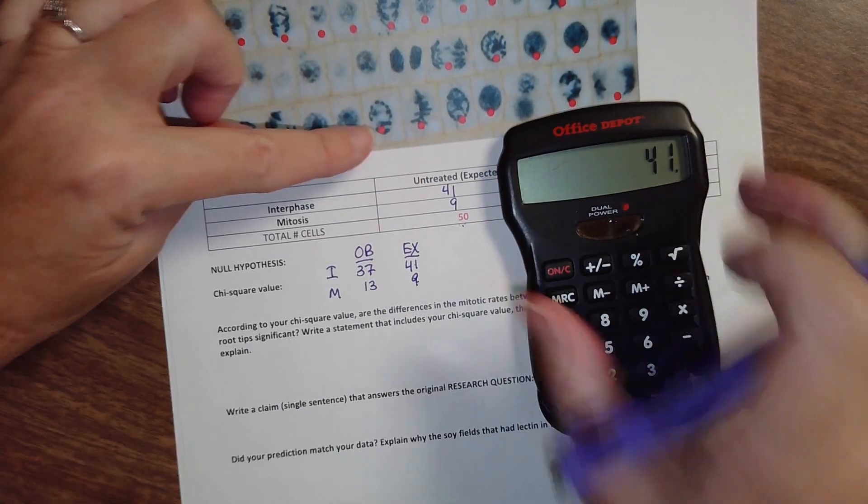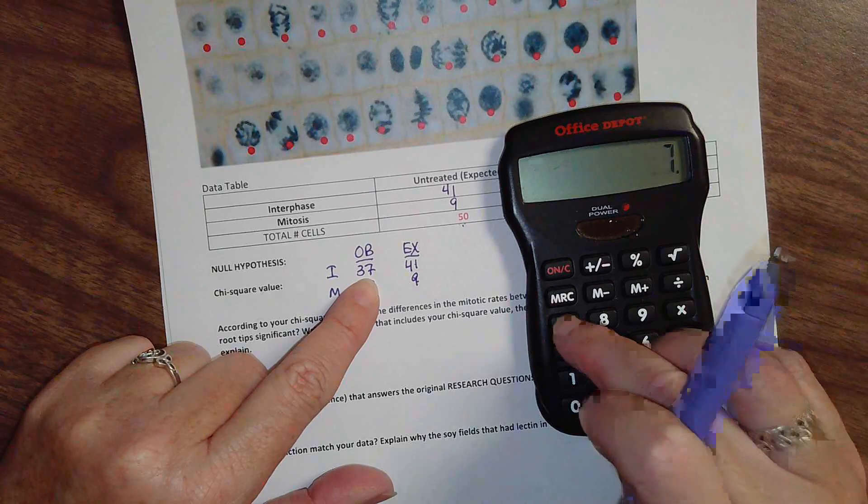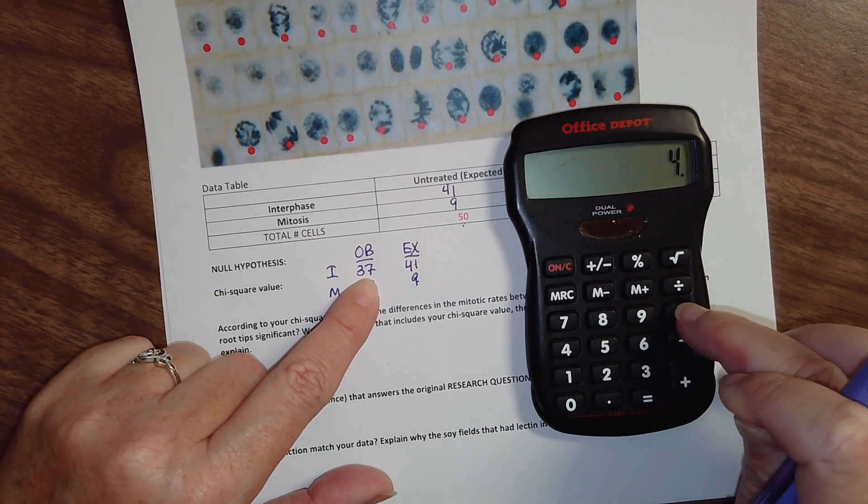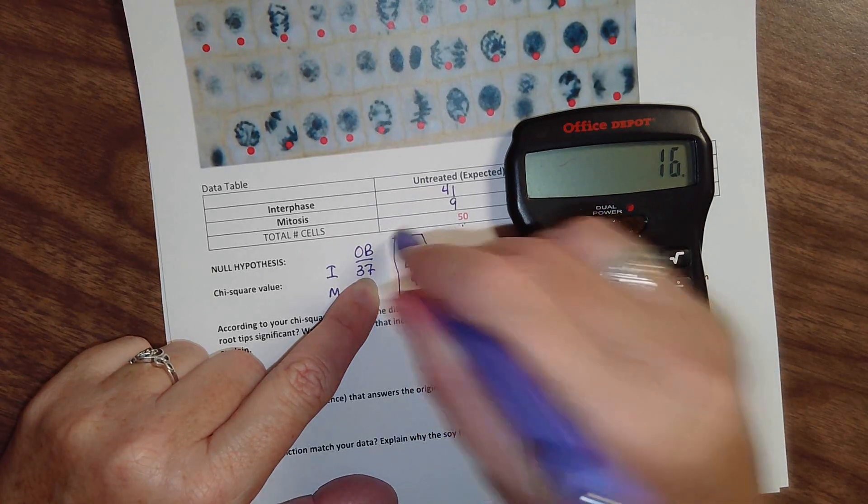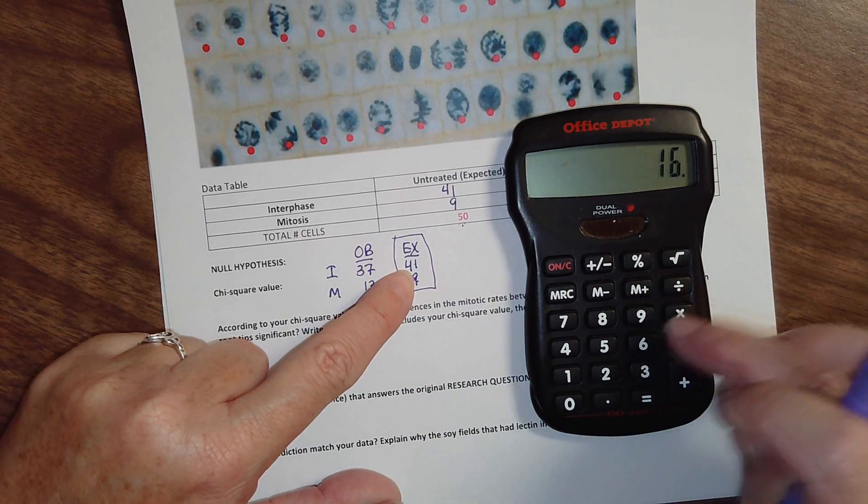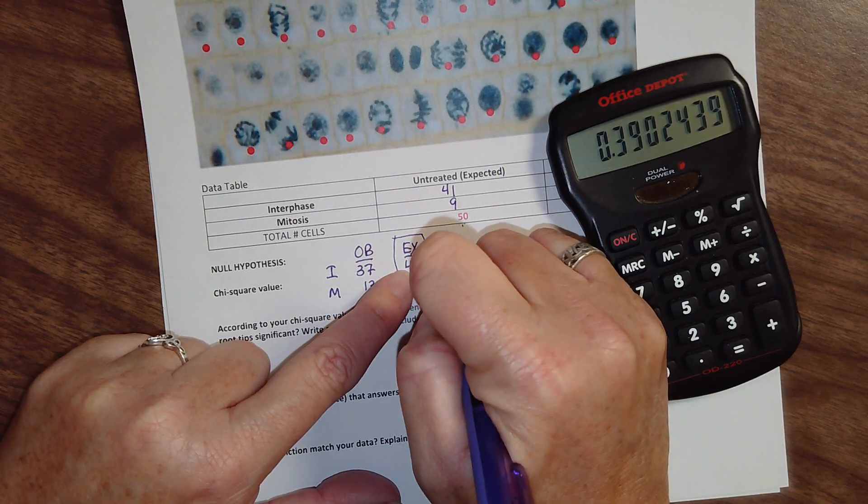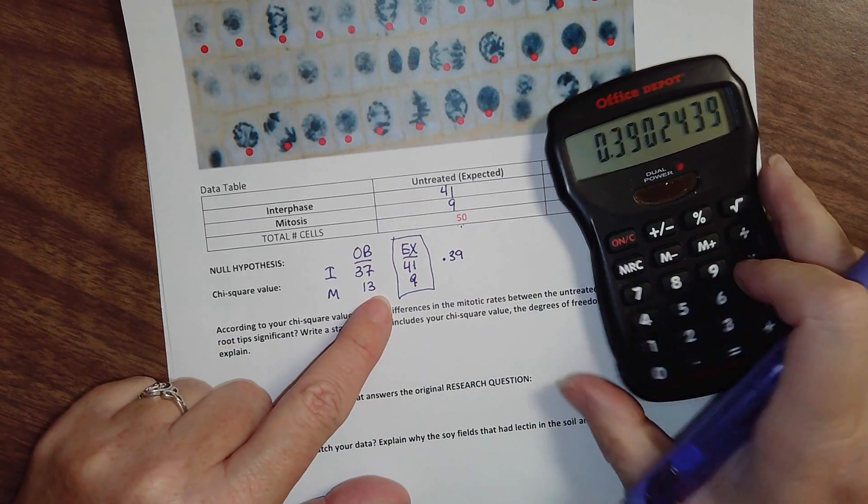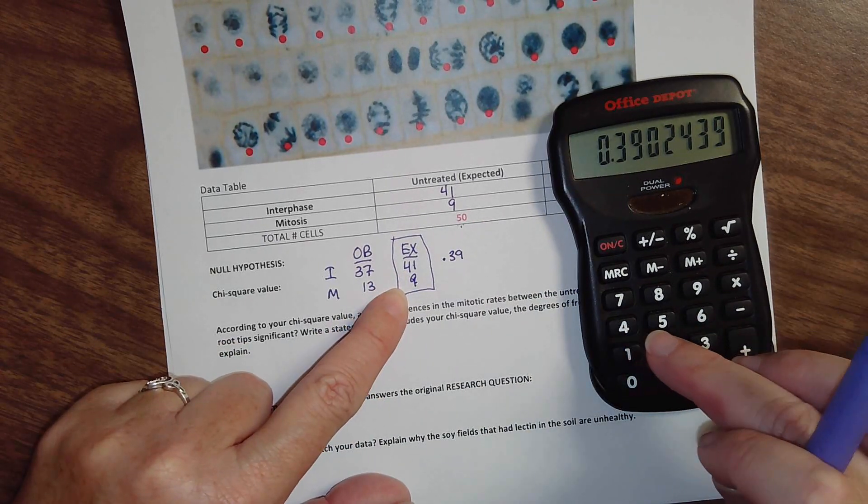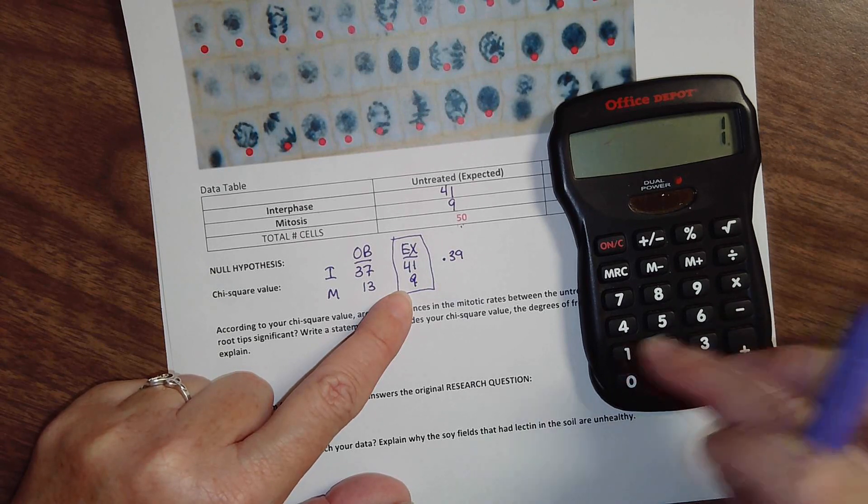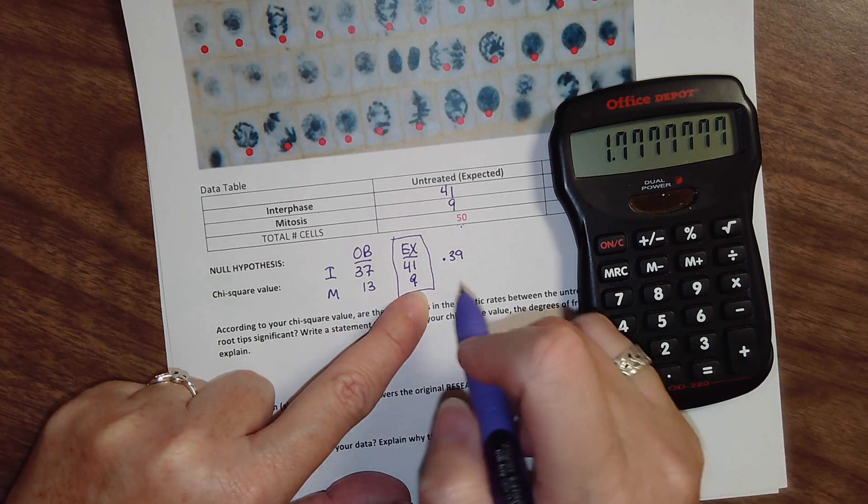So then you just take your calculator and you say 41 minus 37 squared, so times itself, and then always divide by the expected. So we're going to divide by 41. That gives me 0.39. And then here I've got 13 minus 9. That difference is 4. Squared is 16. Divide that by 9. And that gives me 1.77.